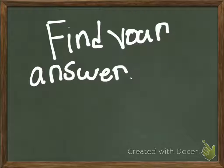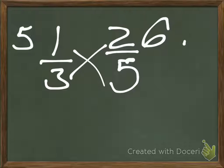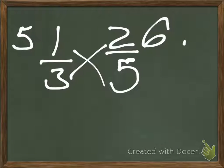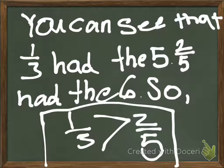Find your answer and see now that one-third has a five and two-fifths have a six. You can see that one-third had the five, two-fifths had the six. So one-third is bigger than two-fifths.